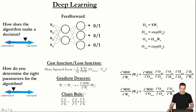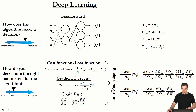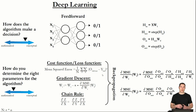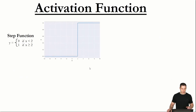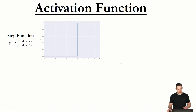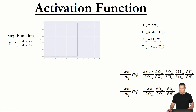We could now start to implement backpropagation, but before we do that we have to make one more adjustment: we need to modify our activation function, the step function. That's because the step function is not differentiable when x equals 2, due to the step discontinuity. This means we can't determine the partial derivative of O_out with respect to O_in, or the partial derivative of H_out with respect to H_in — so we can't determine how to update our weight matrices.